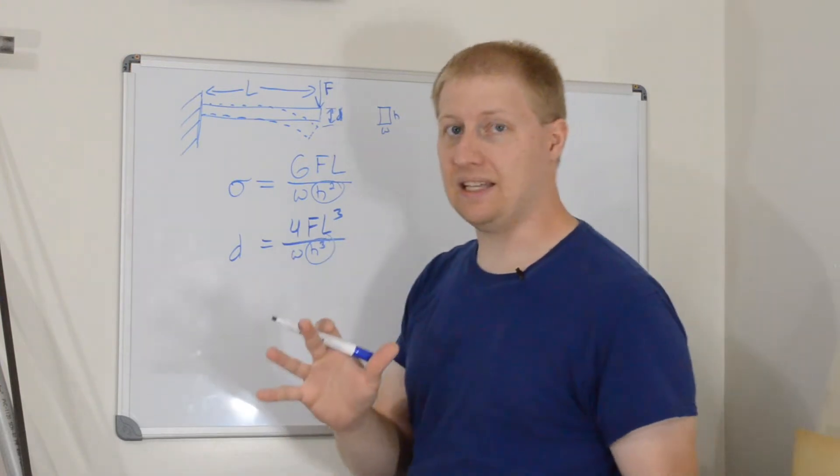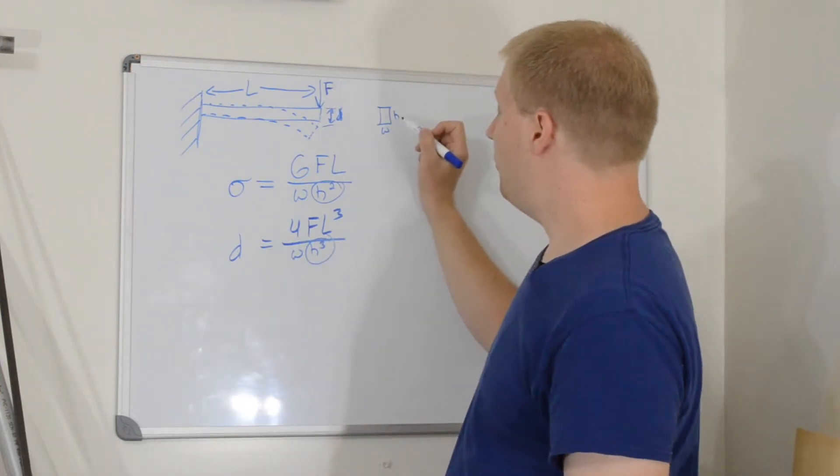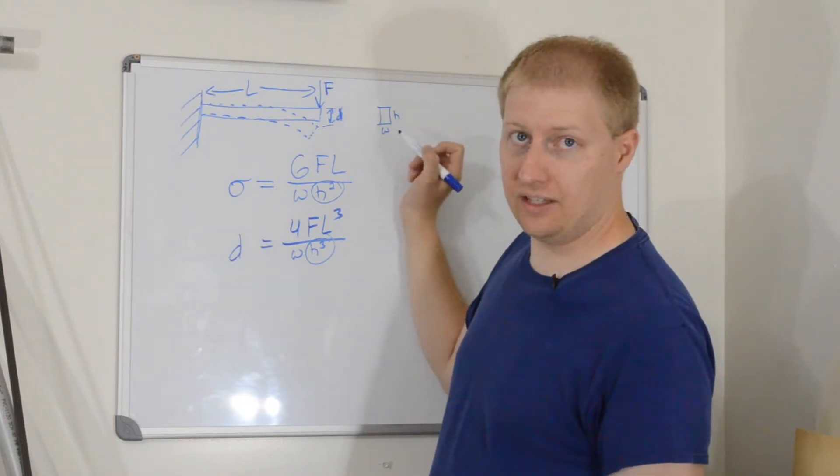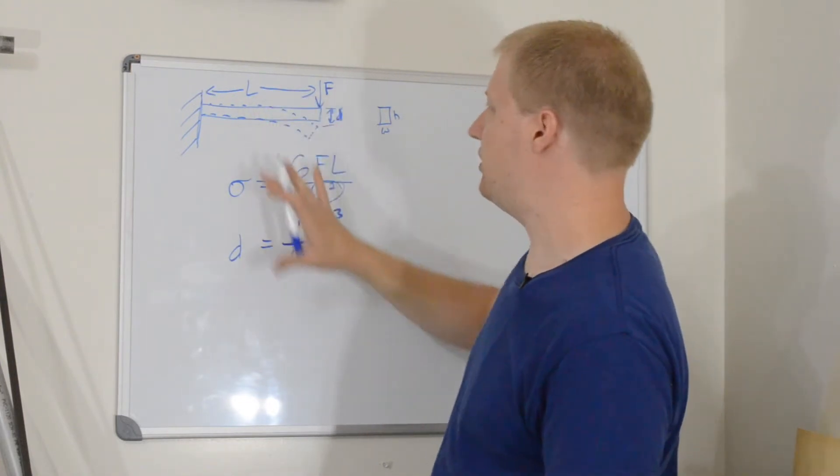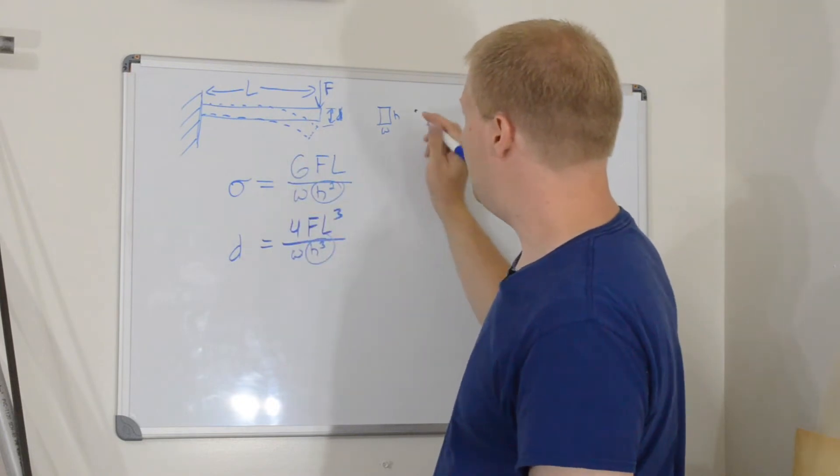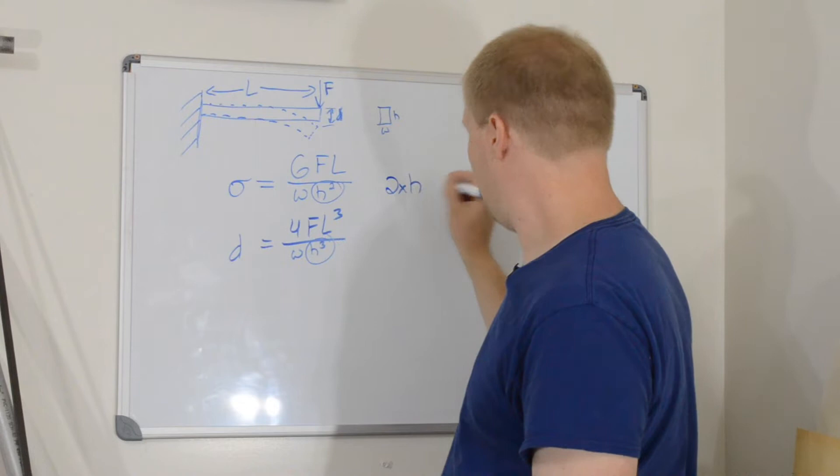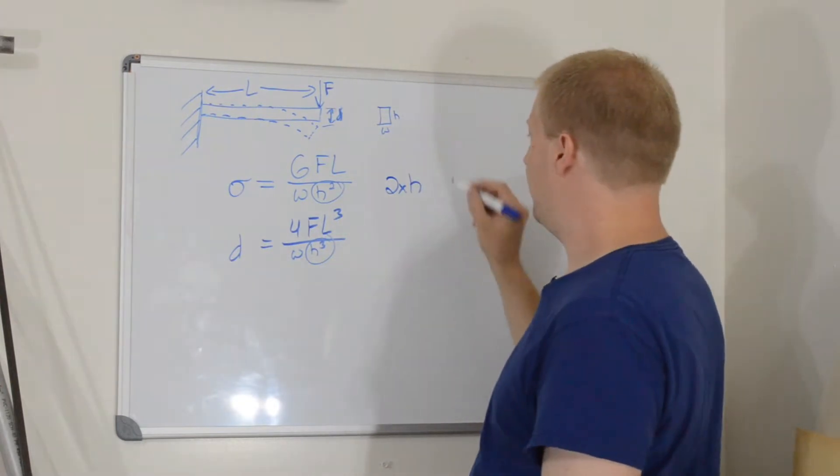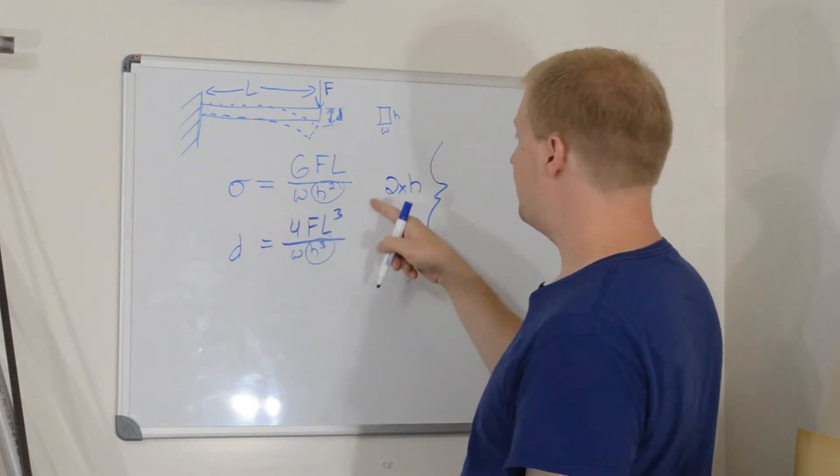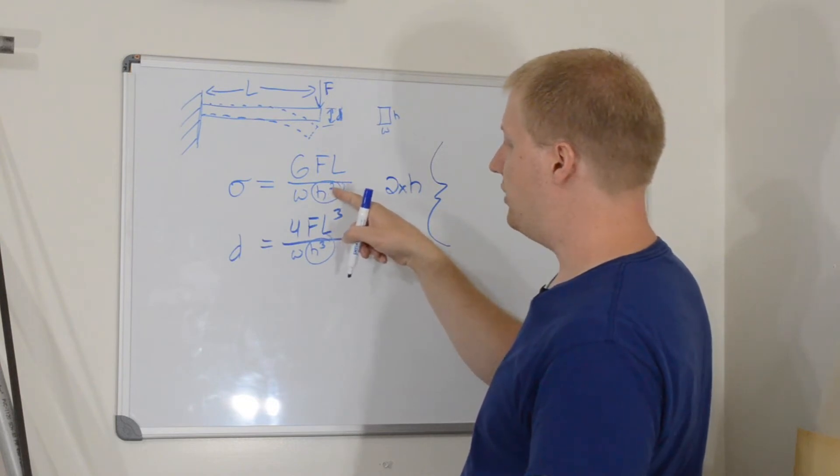So, what that means is if we were to take and double the height of this beam, everything else stays the same. All the other dimensions, everything stays the same. If you just double the height, so double the height, the stress is going to be h squared.